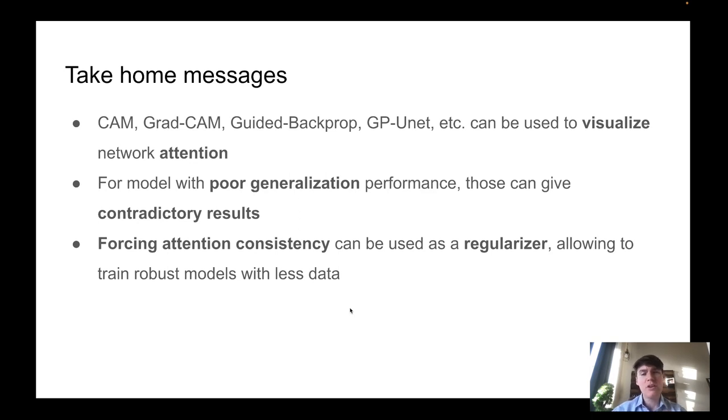So as a take-home message, you can think that models with poor generalization performance, if you compute the attention maps, are going to have contradictory results. You can use these methods to force attention consistency, which act as a regularizer and improves detection and classification results.